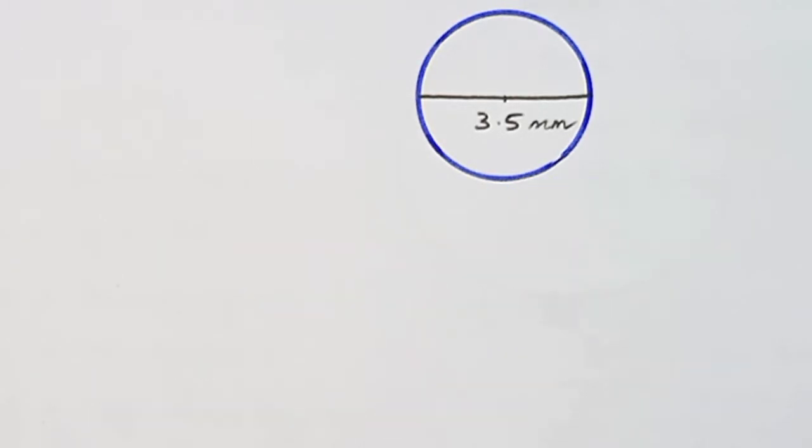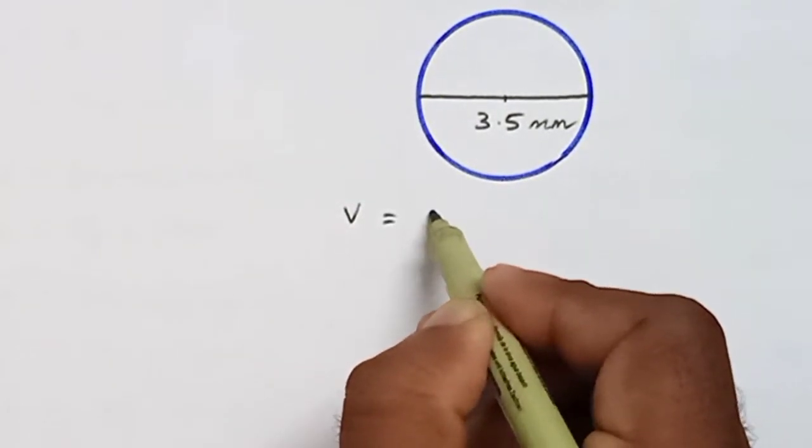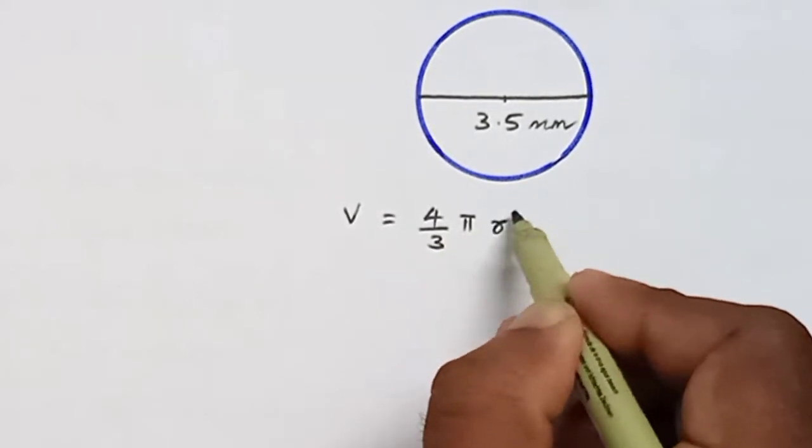It is given that the diameter of the sphere is 3.5 mm, so we have to find the volume. The volume of this sphere that we know is 4 by 3 pi r cubed.